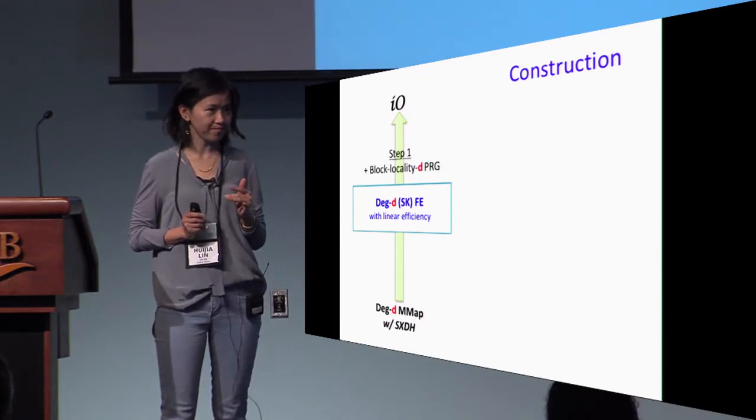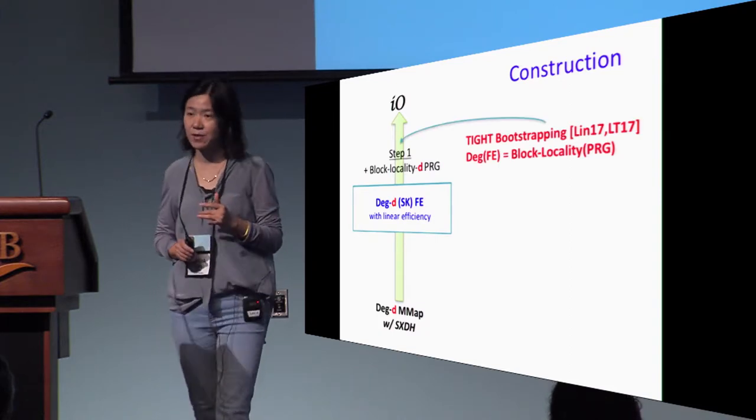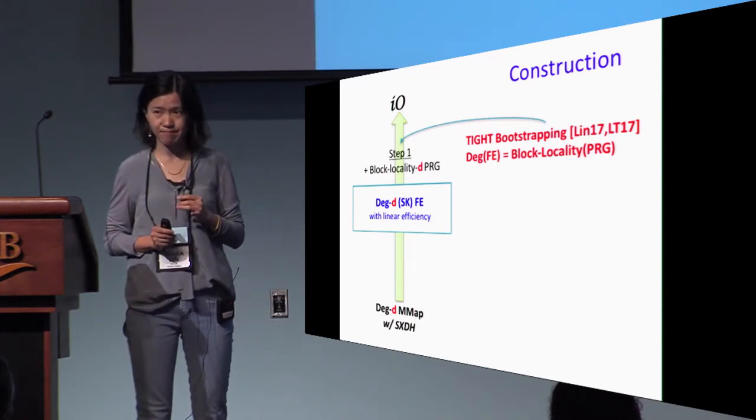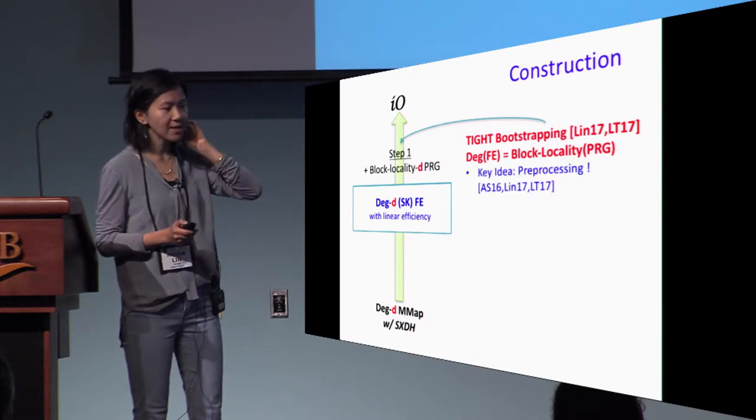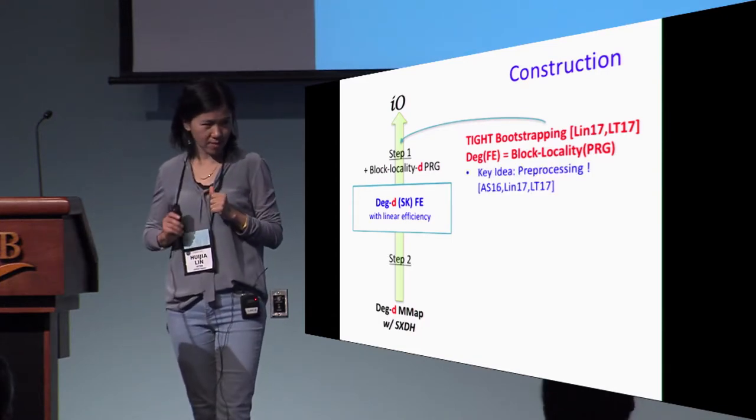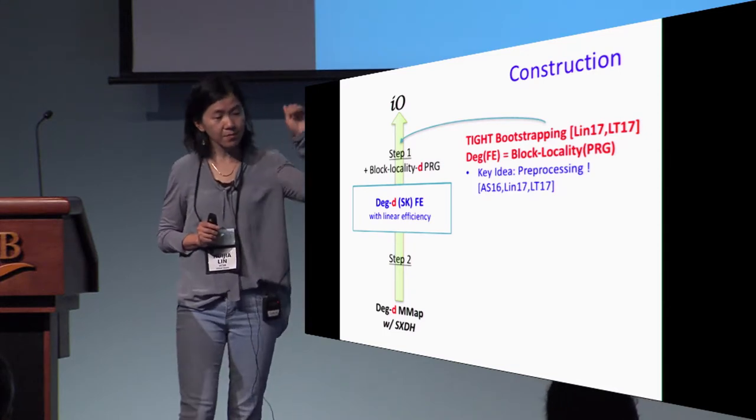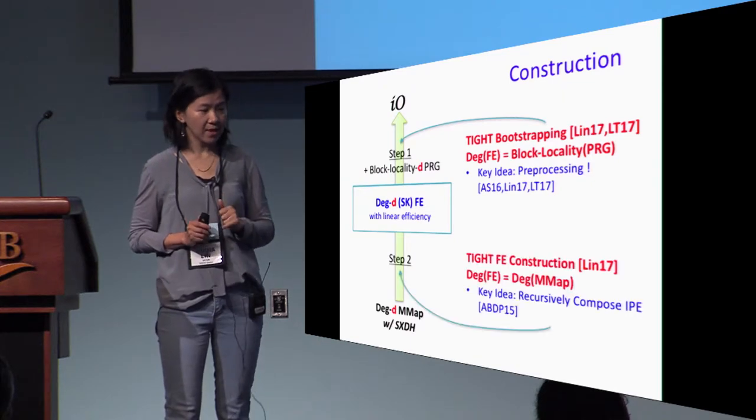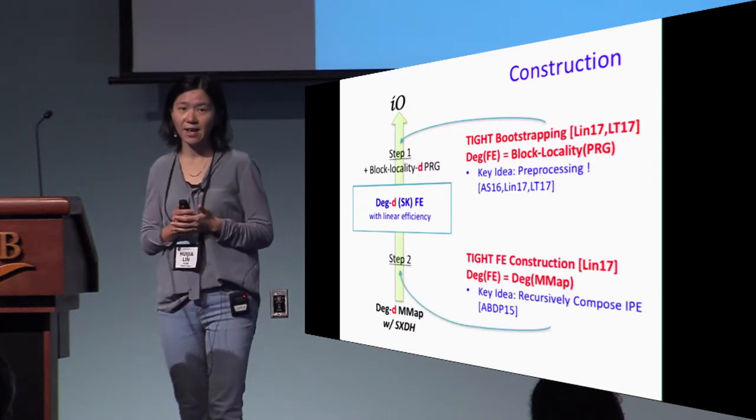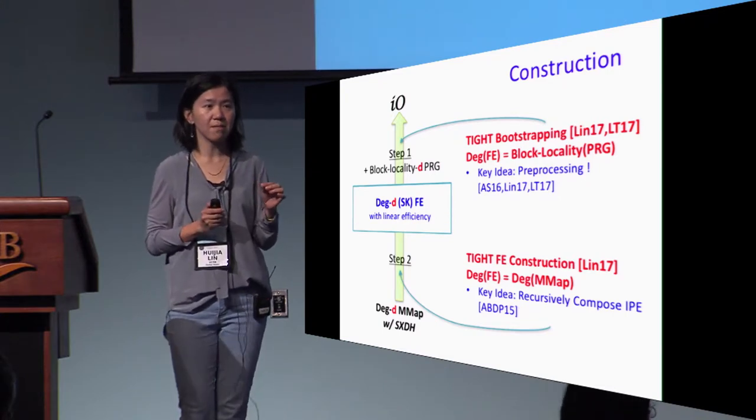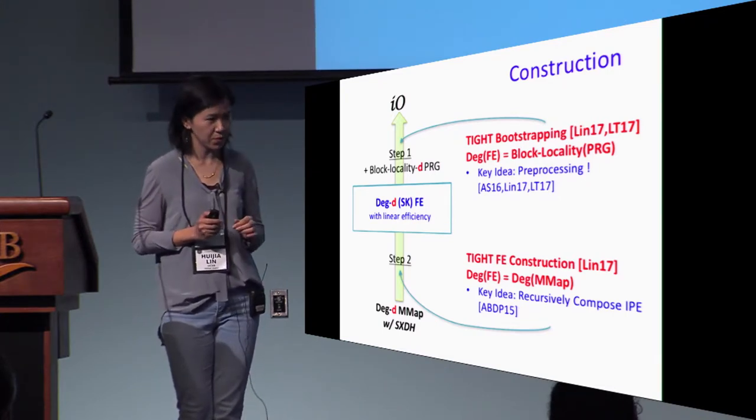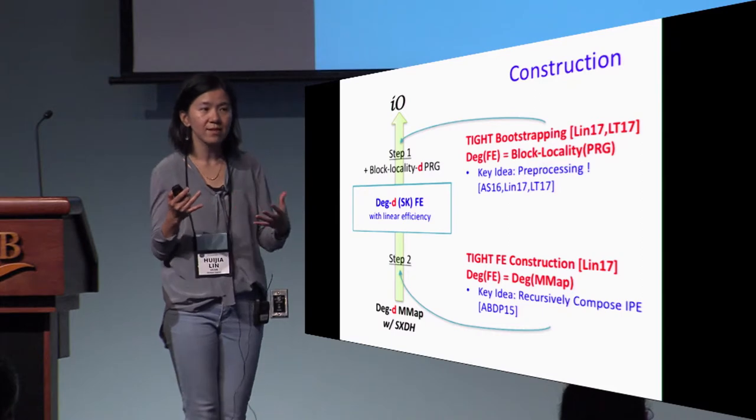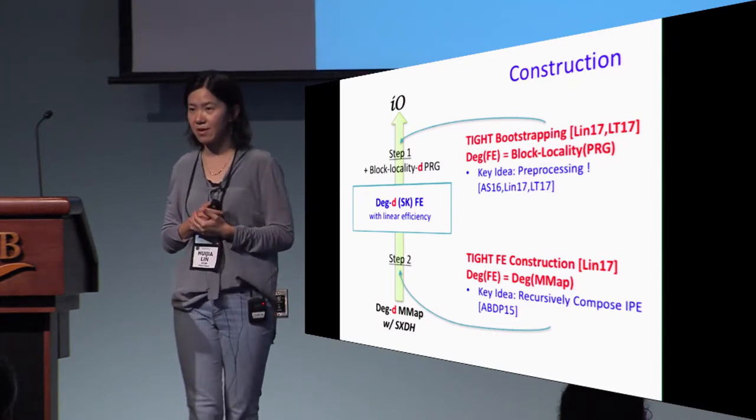What we give is the first tight bootstrapping technique which makes sure that the degree of the FE equals to the locality or the block locality. The key idea here is preprocessing. Then in the next step, we will implement those degree FE that we need using exactly degree D multilinear map. Here again, for the first time, we give a tight FE construction where the degree of the multilinear map is exactly the degree of the function we want to compute. The key idea here is to somehow recursively compose very simple functional encryption that computes only inner product. I'll give you some high-level idea of how each step is done. Let's start with the first.